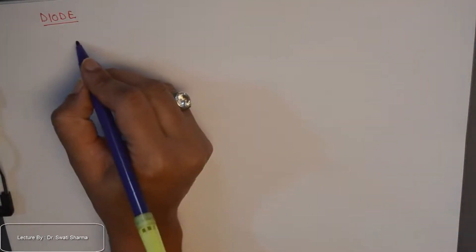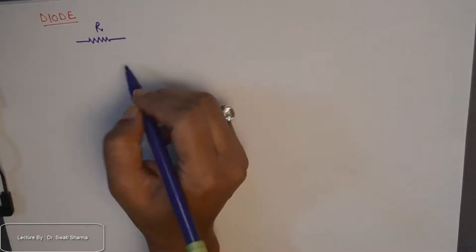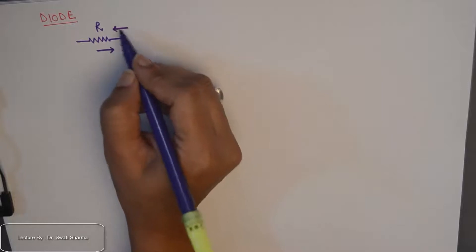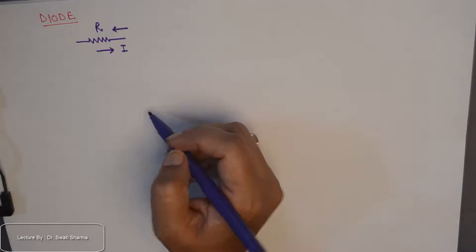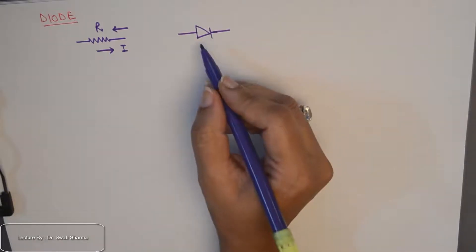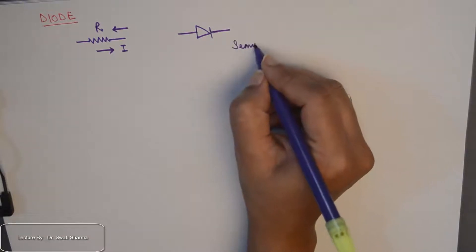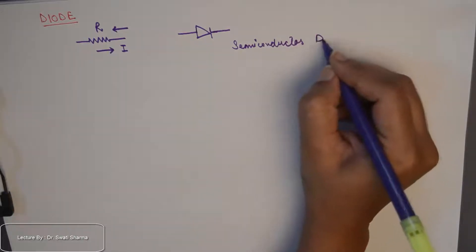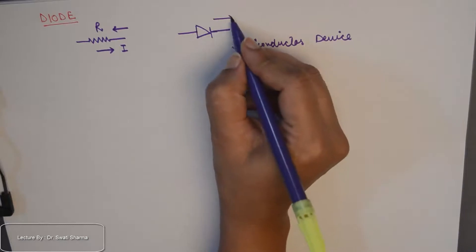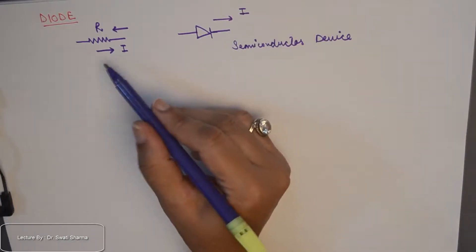Today I will talk about the diode, which is the basic building block of electronics. First of all, you must have seen a resistor, which is a passive network element that allows the flow of current in both directions. A diode is a semiconductor device which also allows the flow of current as a resistor does, but only in one direction. That is how a diode differs from a basic resistive element.